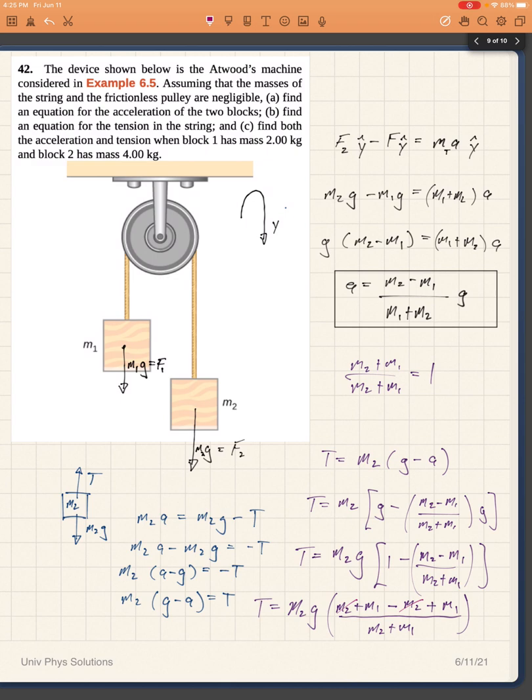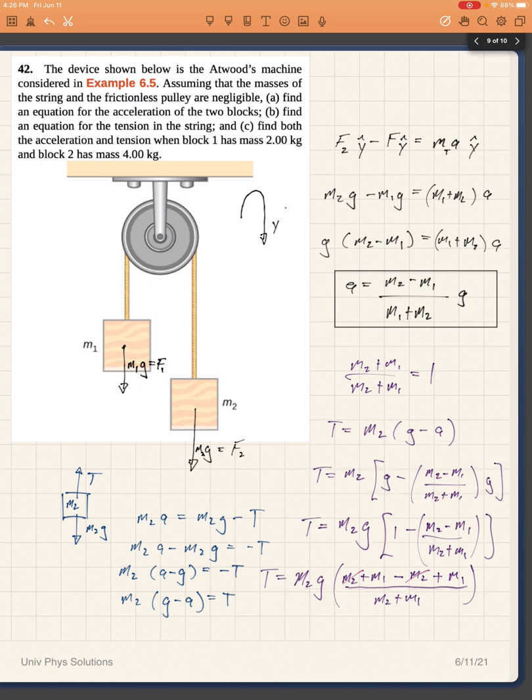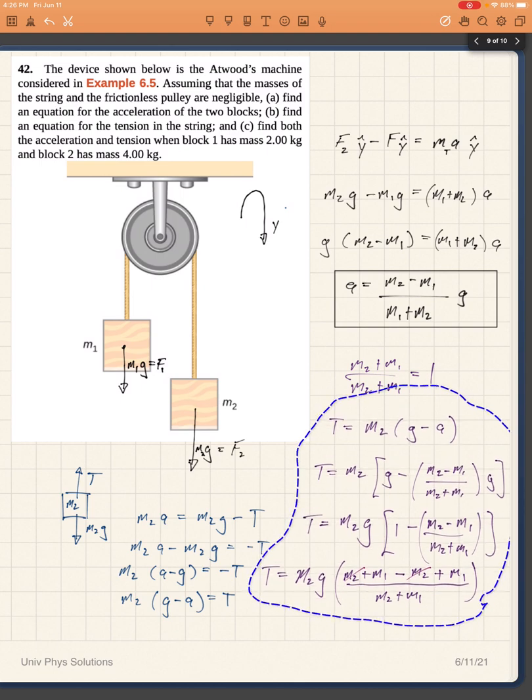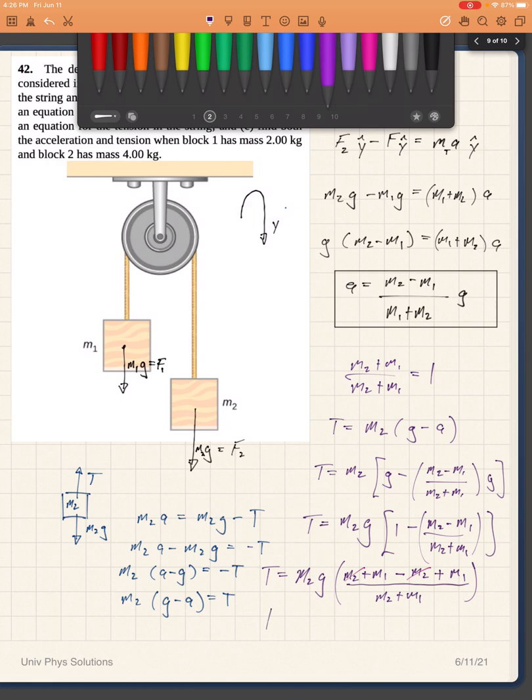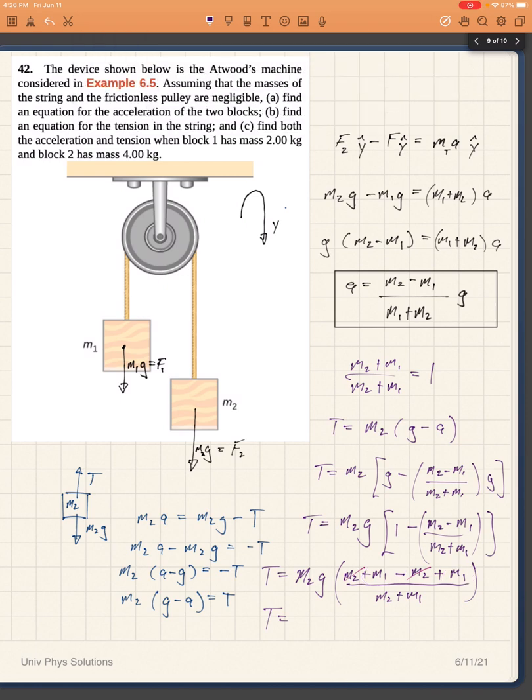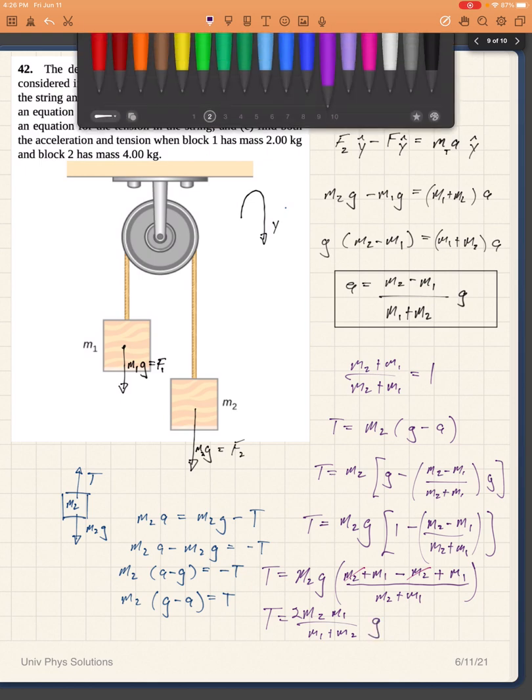And so then my answer is going to be, let's give myself a little bit more room, that the tension is equal to M2 times 2M1, because that M1 is going to add, over M1 plus M2 times G.